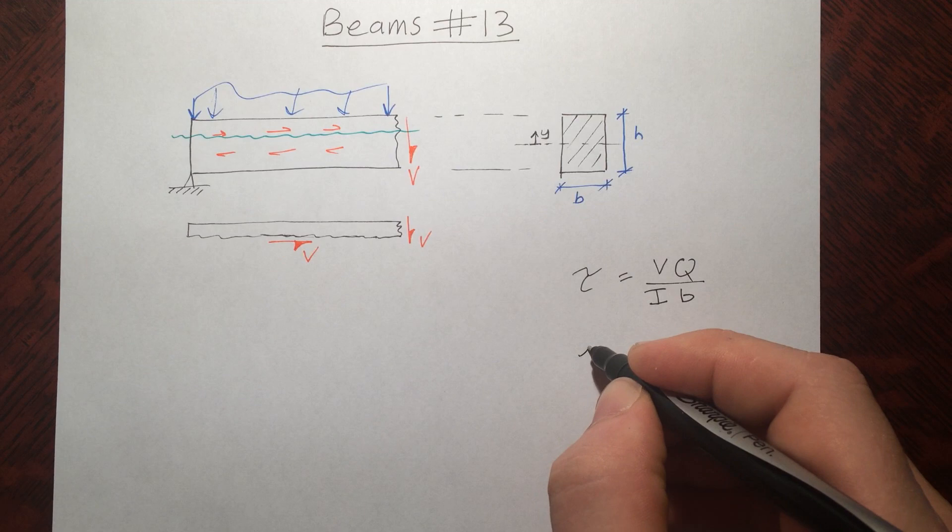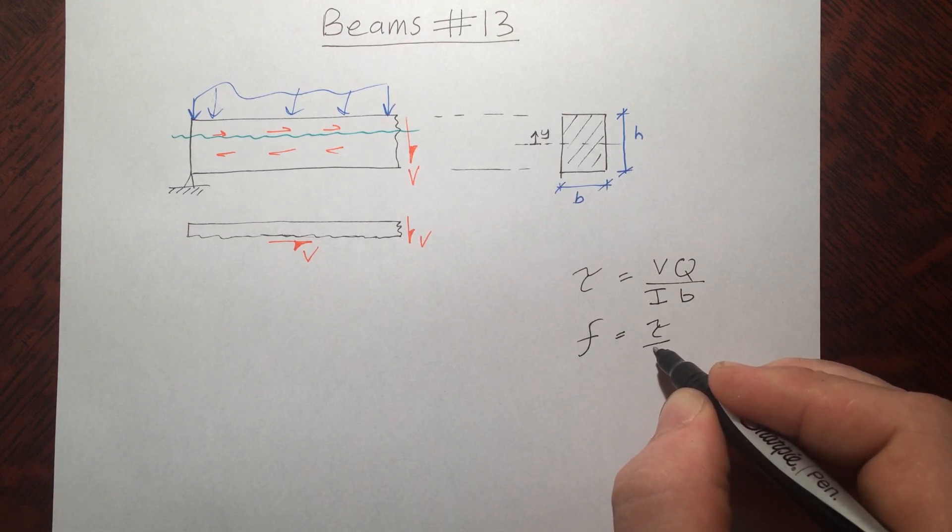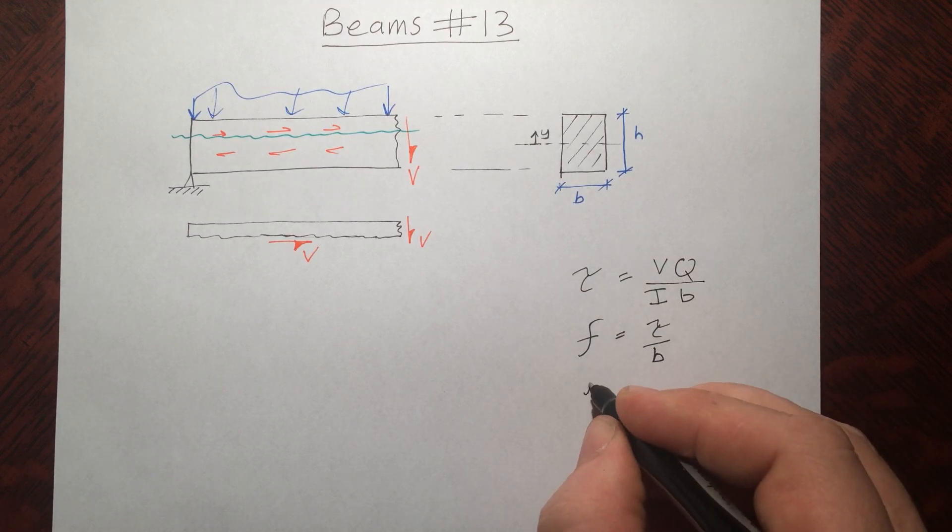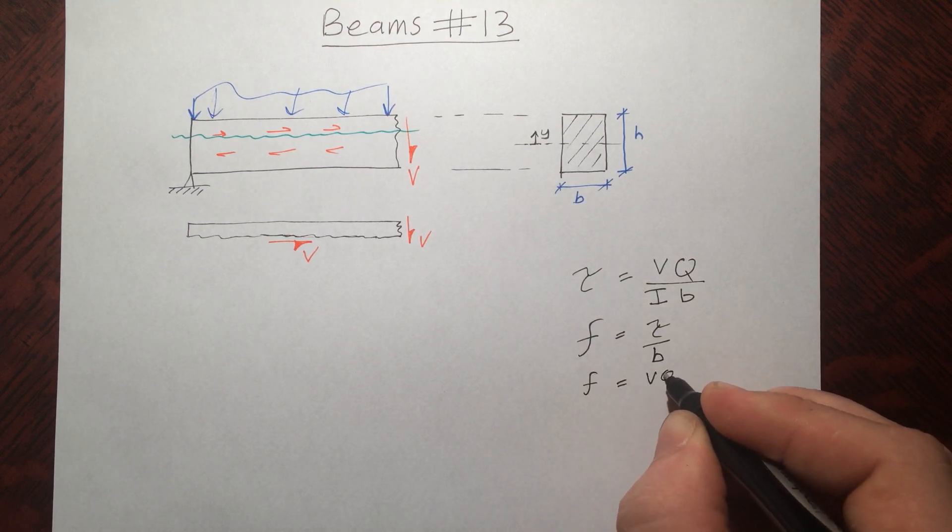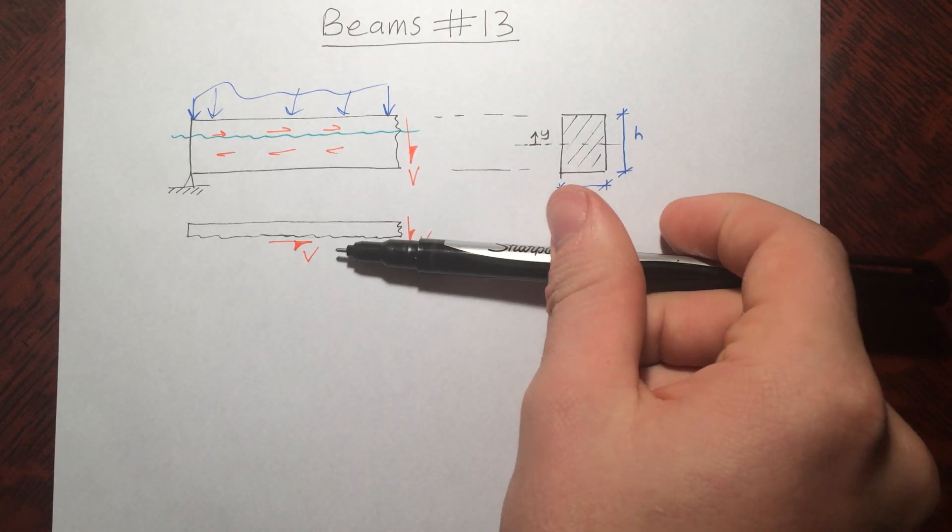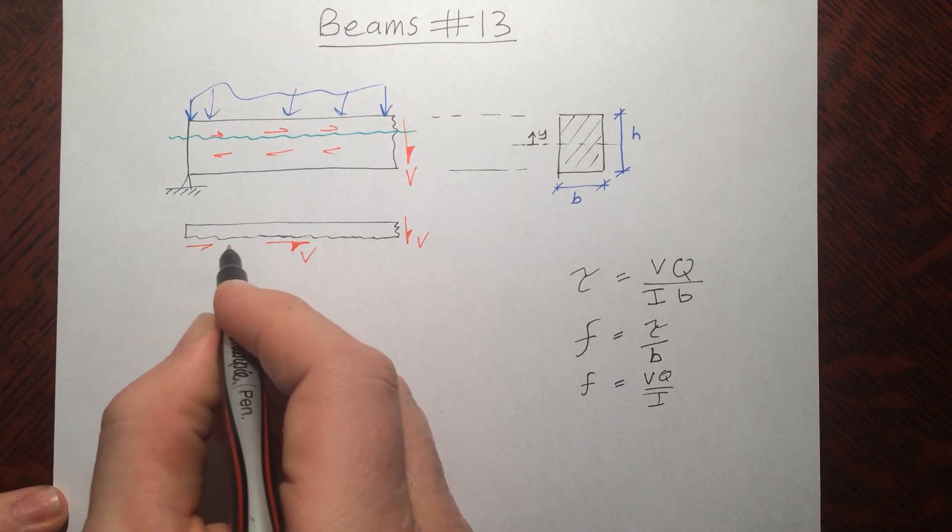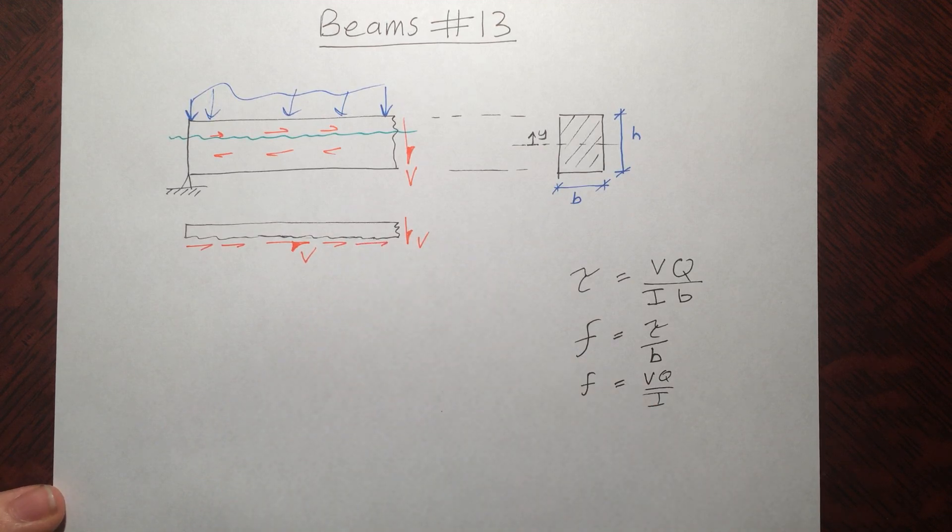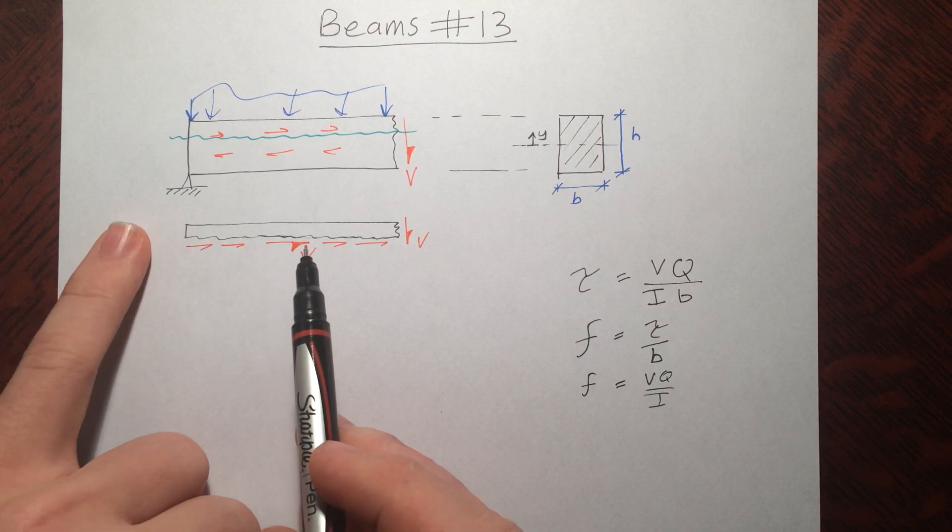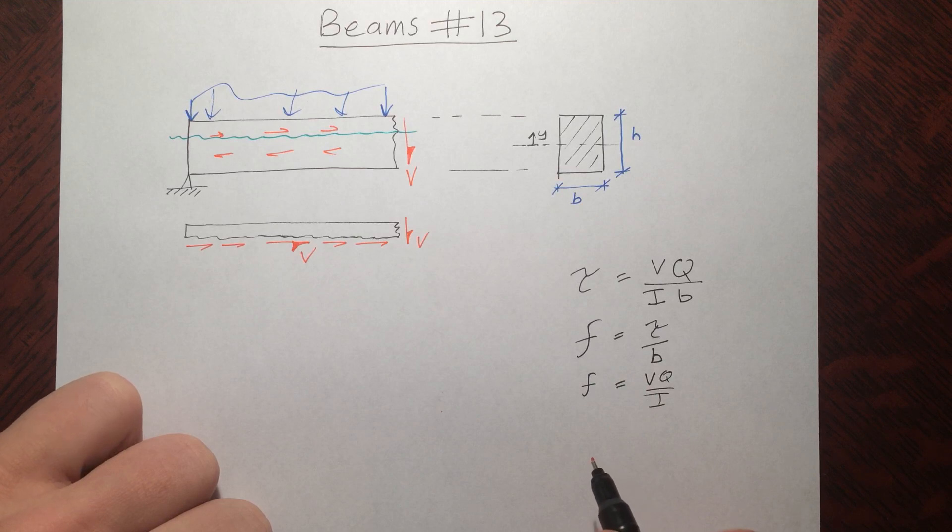Another important thing is shear flow. We give this some F. It's basically equal to this over B. So rearranging this equation, it's just VQ over I. That's basically how many newtons per meter there are on the bottom of this thing. So you can imagine the shear force is not just in one single spot. It's spread out over this whole piece. So this shear flow gives you the number or the amount of, let's say, newtons per meter there are on that piece. And this comes in later when we calculate things like spacings of nails and beams.